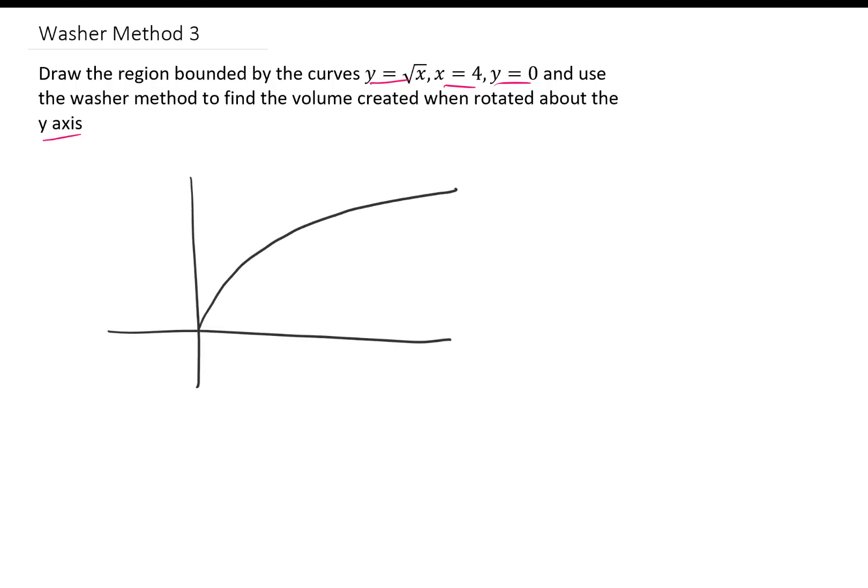Let's take a look at this graph. The square root of x looks like this. x equals four is a vertical line, and y equals zero is this x-axis here. So the region in question is this one.